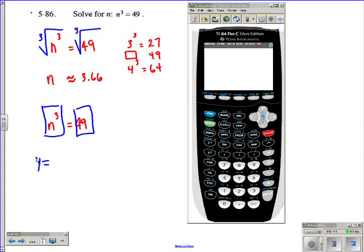So we'd say y equals n to the third, and in this case, we'll just use an x on the calculator, so that's really the same thing as saying y equals x to the third, and over here, we'd say y equals 49.